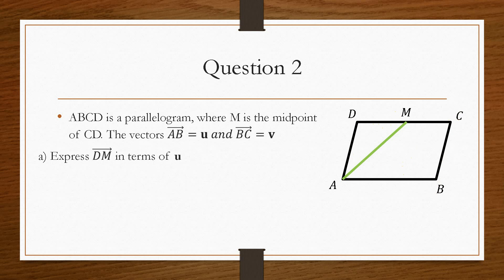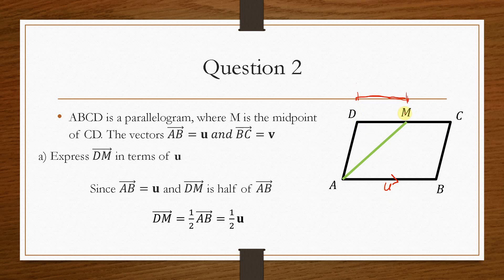Looking at part a first — to express dm in terms of u — we know that ab is expressed by u, so going in that direction is positive u. We're working with the u vector, but we need to work out what it would be only for this section, because we aren't going all the way across. From d to c is vector u. Because m is the midpoint of dc, from d to m is going to be half of that. So dm equals half of ab, and in terms of u, it's going to be one half u.